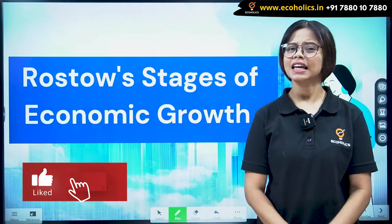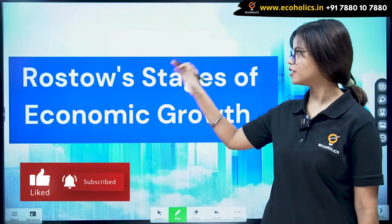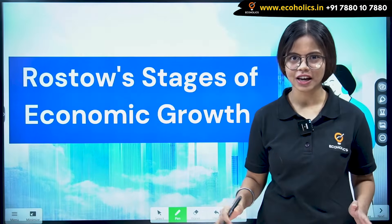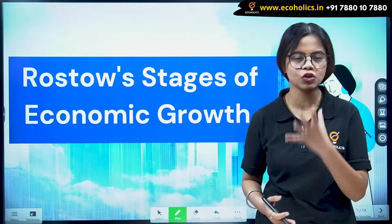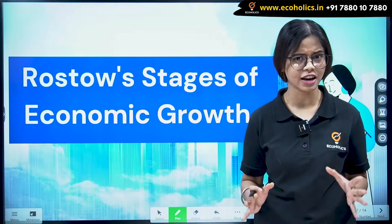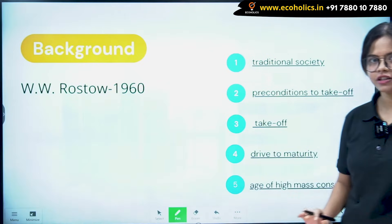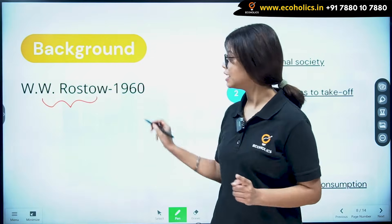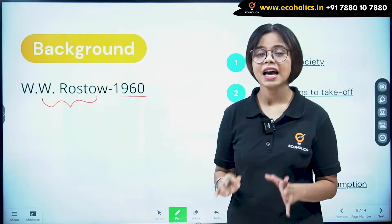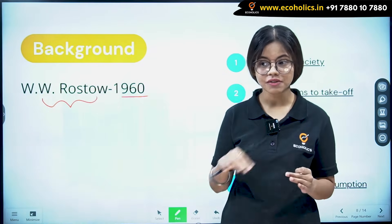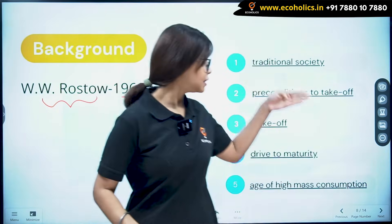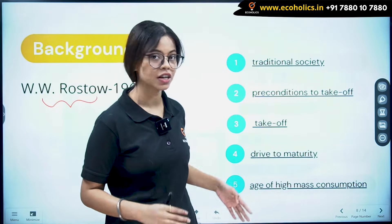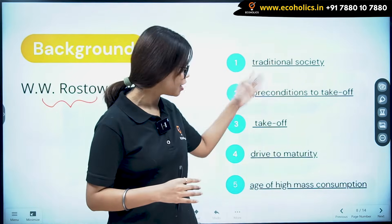Hello and welcome to Ecoholics. In this video, let's understand Rostow's Stages of Economic Growth. This growth theory is very easy — you can read it once and understand it nicely. The theory was given by W.W. Rostow in the 1960s, and according to him, for a country to develop or grow, it has to pass through five stages. You need to memorize the order of these stages because in exams they jumble them and ask you to rearrange.